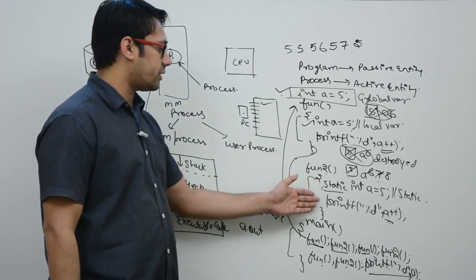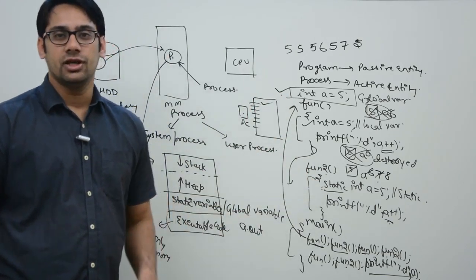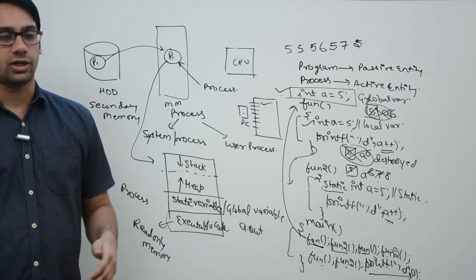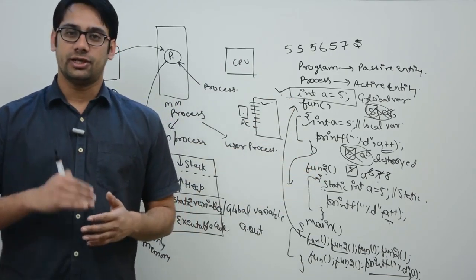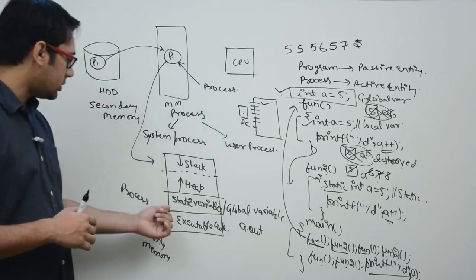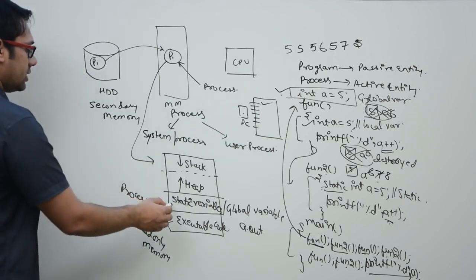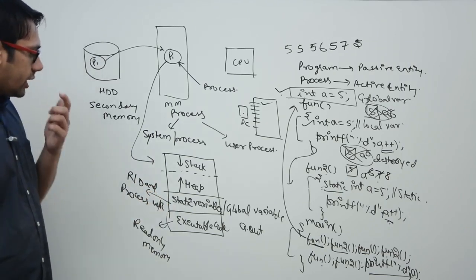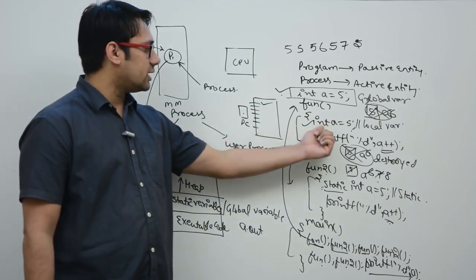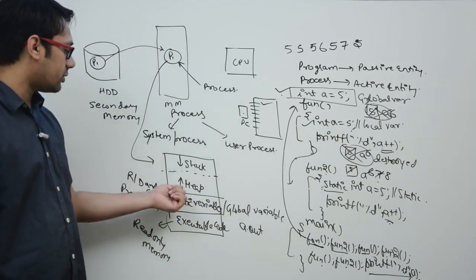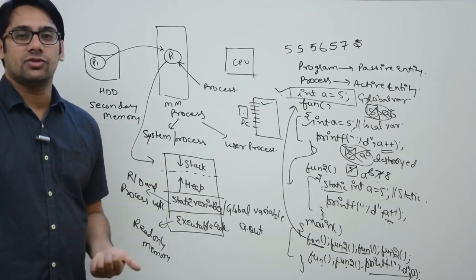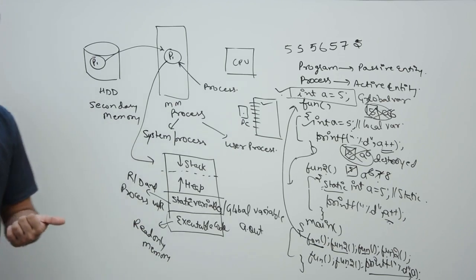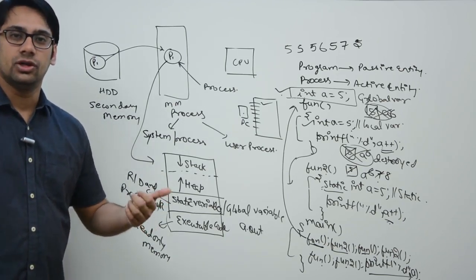The key distinction is that both static and global variables remain until the end of program execution, so they are stored in a separate read-write memory area. Auto (local) variables, on the other hand, are stored in the heap or stack since they are needed temporarily. In Java, non-static variables are stored in the heap; static functions like `public static void main` exist without needing an object of the class.